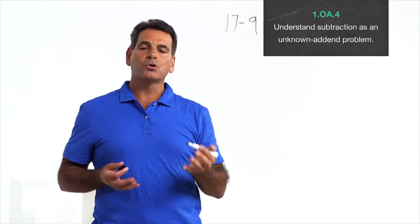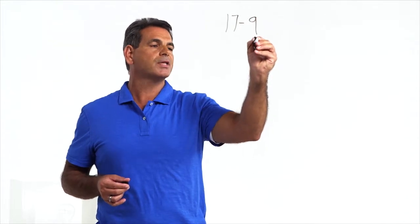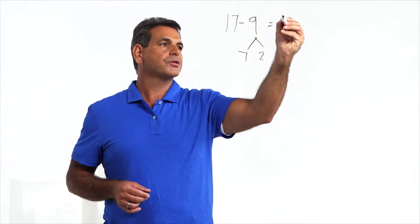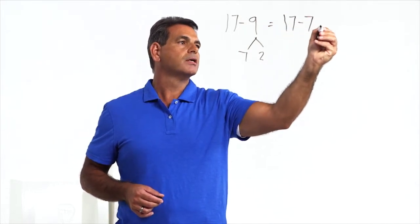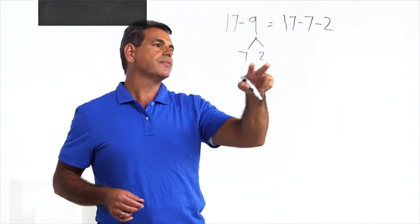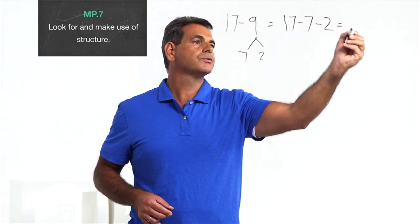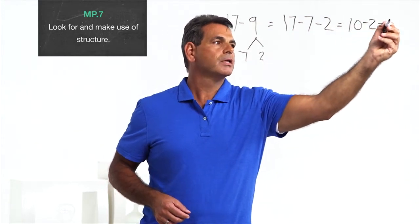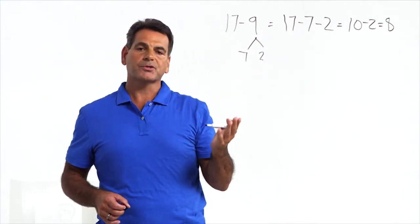The first strategy is called going back through ten. We decompose this nine into a seven and a two, which allows us to go back through ten. Seventeen minus seven minus two — we changed nine to a seven and two — and this allows us to make a ten. This equals ten minus two, which equals eight.